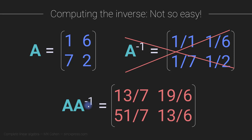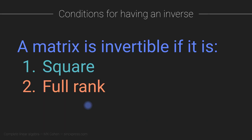Computing the matrix inverse is more complicated, and I will go through several methods in later videos. One thing that makes it more complicated than the scalar case is that not all matrices have an inverse — in fact, many matrices are not invertible. If a matrix has an inverse, it is called invertible or non-singular, or full rank. A matrix has an inverse if and only if it is square and full rank.